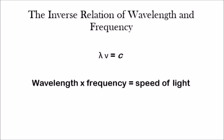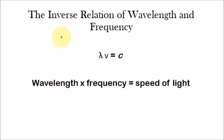The interesting thing about waves is that they have this inverse relation. For any wave, the wavelength times the frequency is equivalent to the speed of light. This is a very important equation that you need to know — you might see questions that revolve around this. So if a wave has a long wavelength, it's going to have a low frequency, and vice versa. If it has a short wavelength, it's going to have a high frequency. It's an inverse relationship — if one goes up, the other goes down.